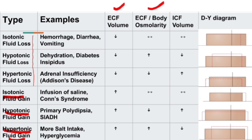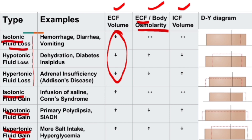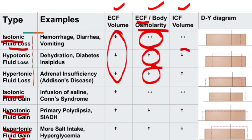I discussed the changes in ECF volume, ECF osmolarity, and ICF volume. If there is a fluid loss, the ECF volume goes down because fluid loss or gain takes place in the extracellular fluid compartment. For ECF osmolarity: isotonic fluid loss causes no change, hypotonic fluid loss increases ECF osmolarity, and hypertonic fluid loss decreases it. ICF volume is affected by extracellular osmolarity — an increase in ECF osmolarity decreases ICF volume, and vice versa.